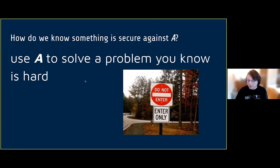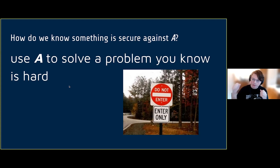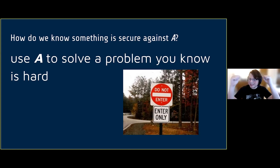You prove that if the adversary exists and can do damage — if it can break your code — you've actually solved the problem you knew was hard. And so this is a contradiction. We are saying that I have this problem I know is impossible, and I have a solution to the problem that doesn't make any sense. So that means the abilities that I said the adversary had in order to break our encryption — it can't exist.